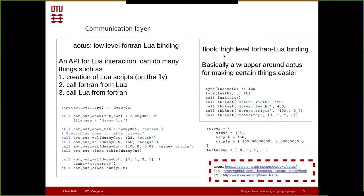The second library is called Fluke — a higher-level Fortran-Lua binding that wraps around Iotus to make certain things easier. Here you create a screen table with a width variable and a height variable, and also create a nested table with two values named origin. In Fluke you use a dot notation — the same way you would dereference a table element in Lua — to create nested tables. So screen.width, screen.height, screen.origin, and a test array: both codes produce the same Lua result.